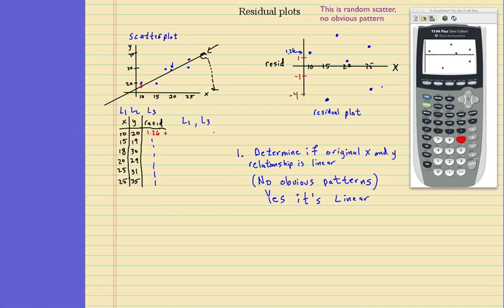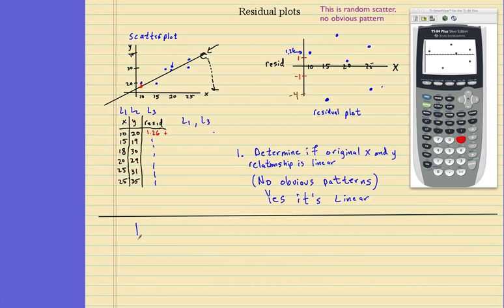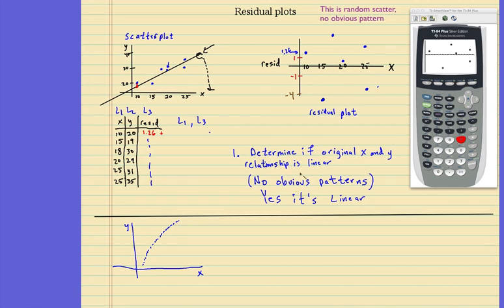So let me show you an example of when that might not be true. So here I have this relationship, and let's say it's like that. So you may look at this and say, yeah, it may be linear, but if you were going to do a least square regression line, the line would look like this. It would cut through like that.